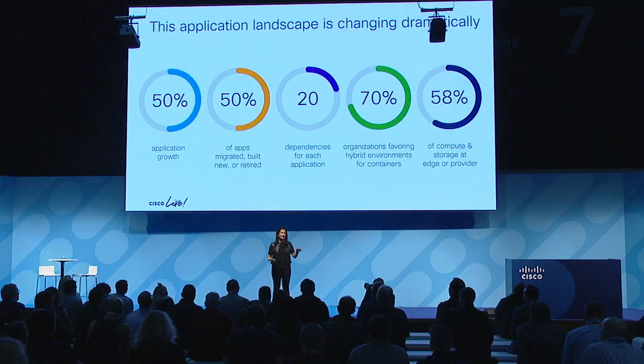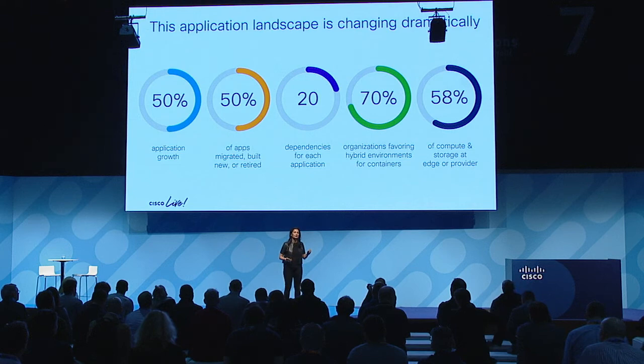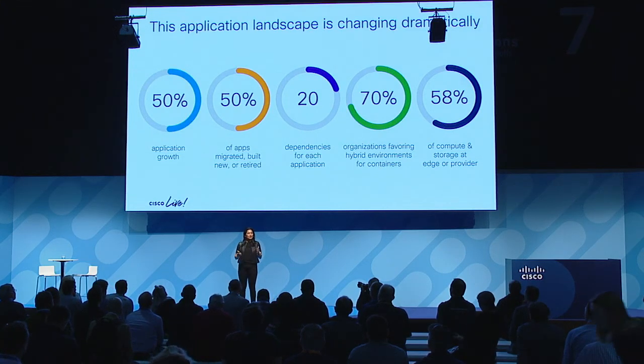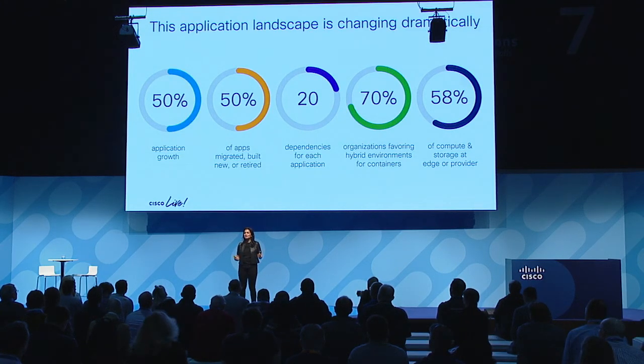Let me start with what the landscape looks like. I picked about five areas or five key data points that I thought were absolutely relevant. The first one: in two years, there's going to be about 50% application growth. A typical enterprise has about 5,000 to 7,000 applications, so that means another 2,500 applications will be added in the next two years.